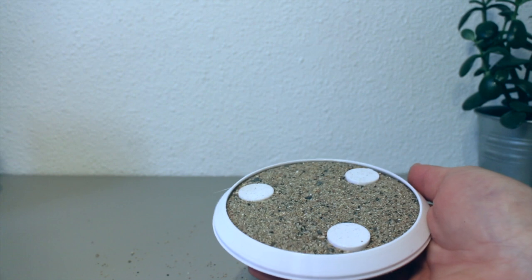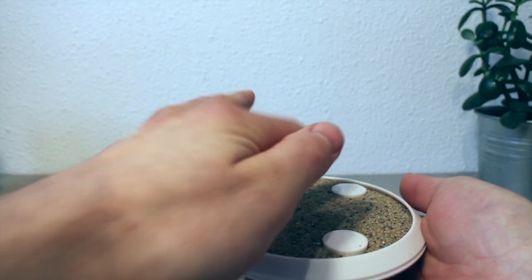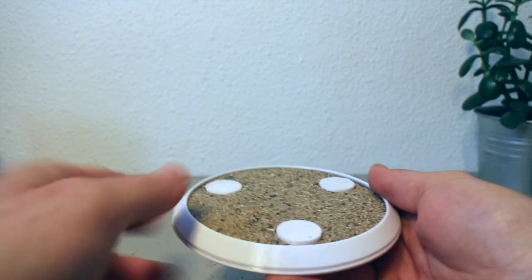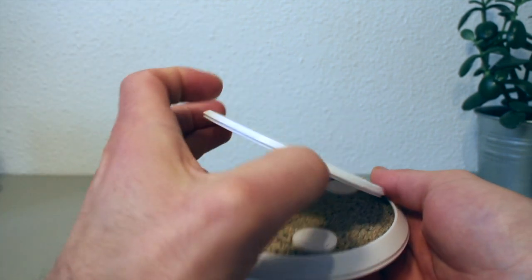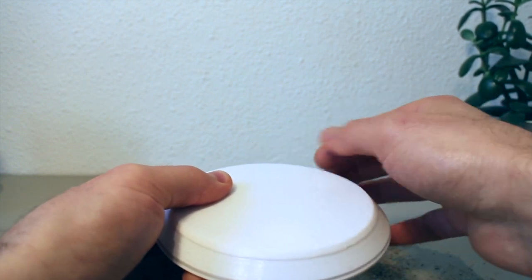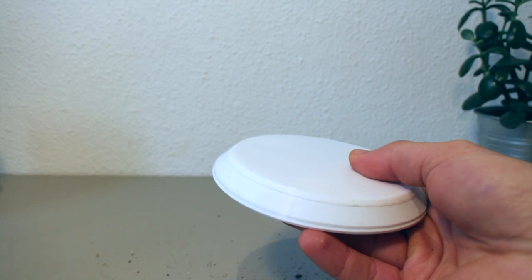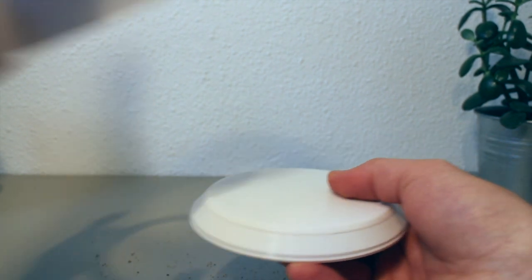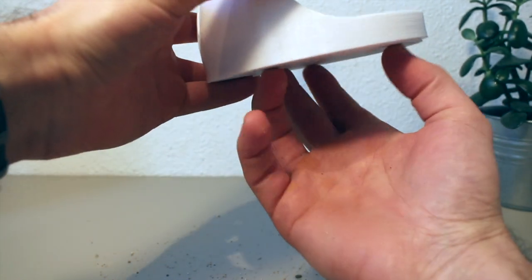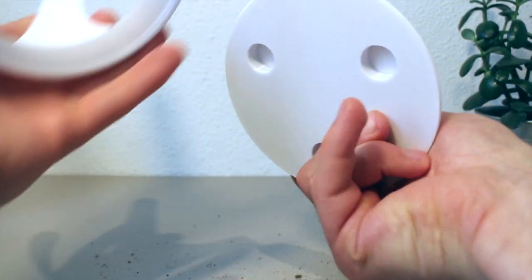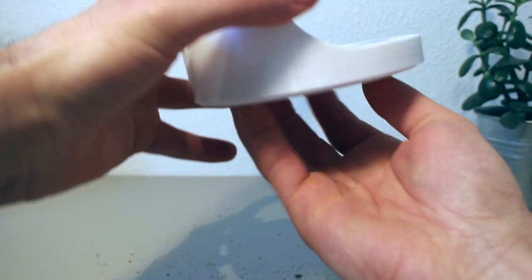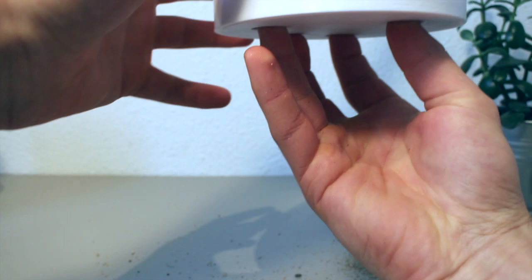So you should have the sand come up to the level where these platforms here are just barely above the sand's surface. Once you have the sand in you can take the lid, put it on like this. This will seal up the hollow enclosure here and then you just insert it into the bottom of the base like this and use the cutouts, these holes here, to screw it with your fingers like that.